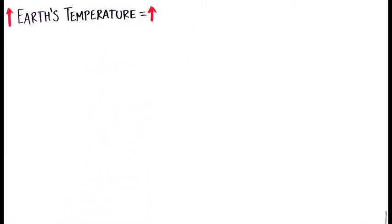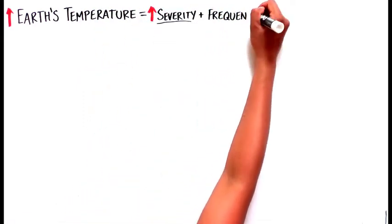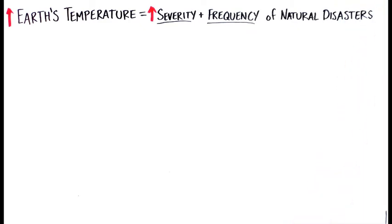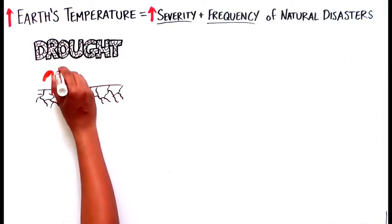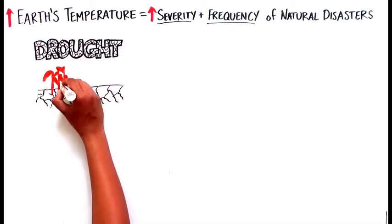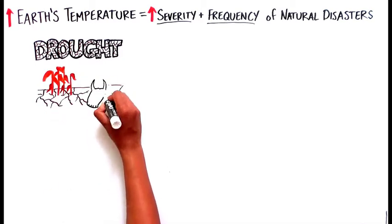Likewise, as the Earth's temperature rises, there is a significant increase in the severity and frequency of climate-related natural disasters around the world. The hot atmosphere dries out the soil, causing prolonged droughts which hurt agriculture and disrupt nature's ecosystems.